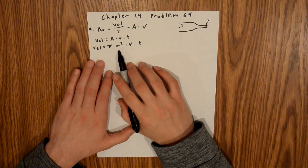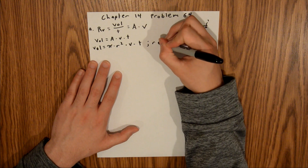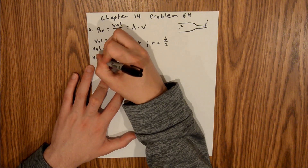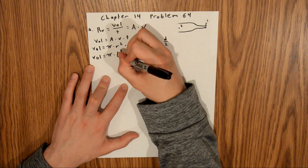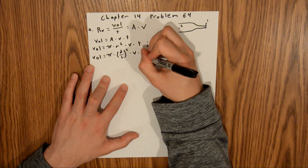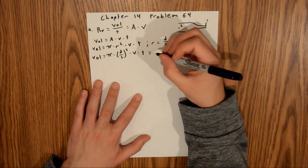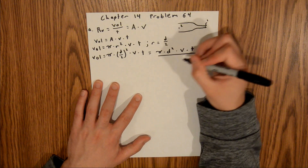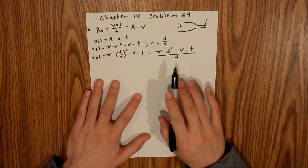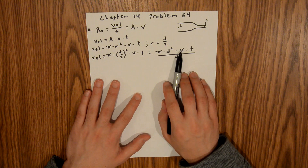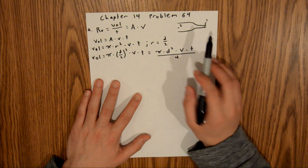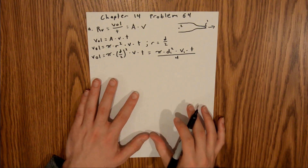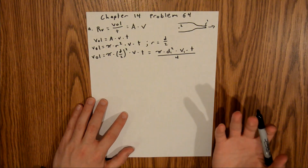We aren't given the radius in the problem, but we're told the diameter, and we know radius equals diameter over 2. Substituting that in, volume equals pi times (diameter/2) squared times velocity times time, which simplifies to pi times diameter squared times velocity times time, all divided by 4. Water flows out at point 1, so we use diameter 1 and velocity 1, both of which are given.